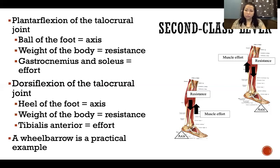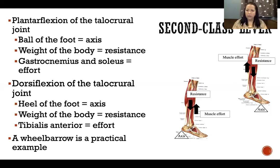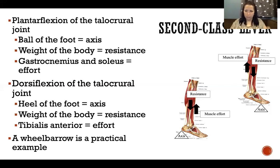A practical real-life example of a second class lever would be a wheelbarrow. The wheel at the front is the axis, the resistance is the weight of what you're carrying in the wheelbarrow, and the effort is you holding the handles and lifting up.